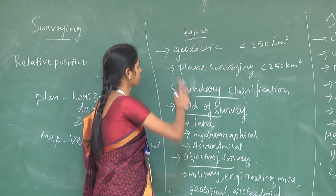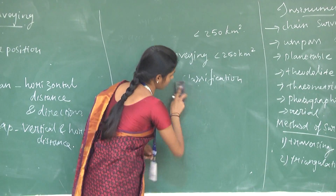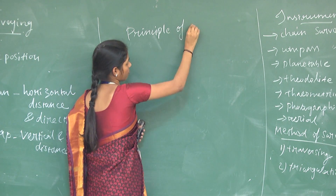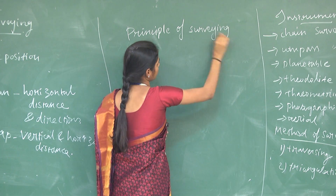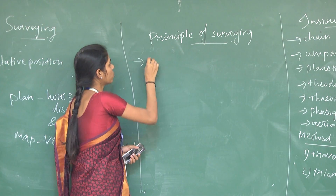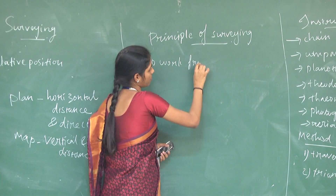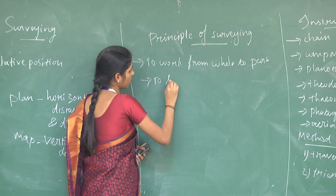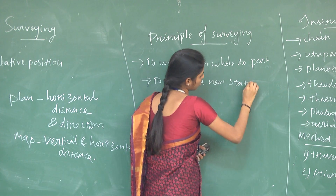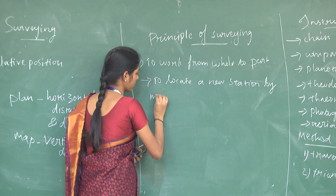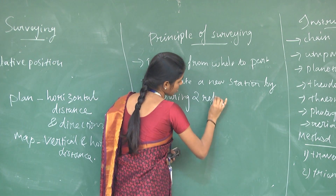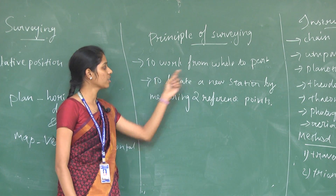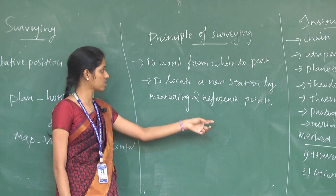We are now going to see the principles of surveying. There are two main principles. The first is to work from the whole to the part. The second is to locate a new station by measuring from two reference points.